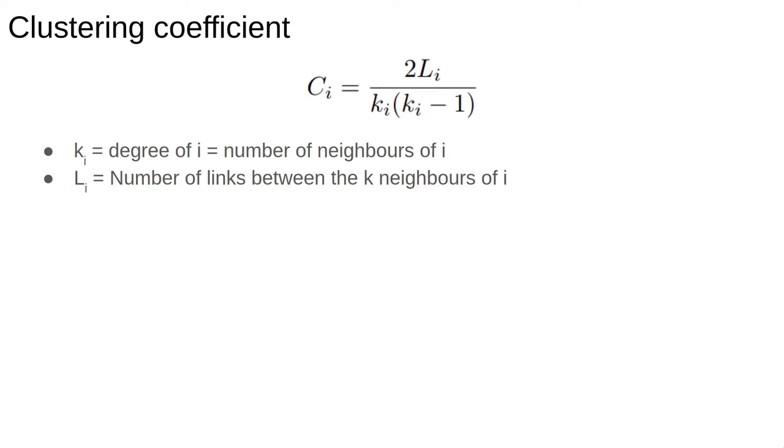It's defined by the ratio between two quantities. The numerator is a number Li which we define as the number of connections between the neighbors of i. For example, here's a very simple network with node i labeled and its neighbors shown in red. To compute Li we imagine deleting the node i and counting the number of connections between the red nodes. In this case there's only one.